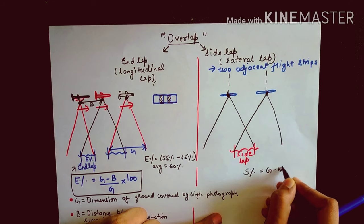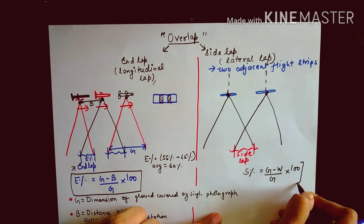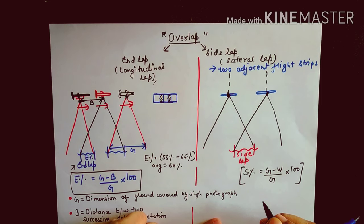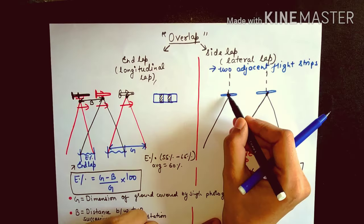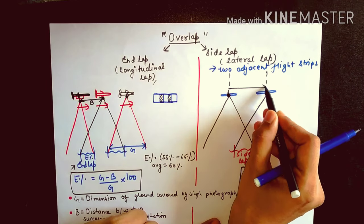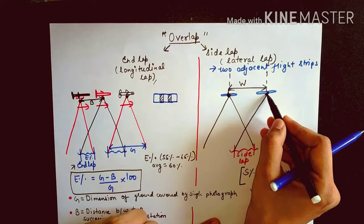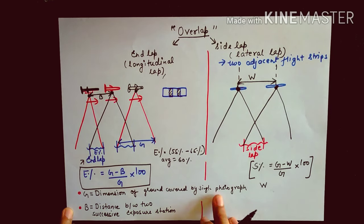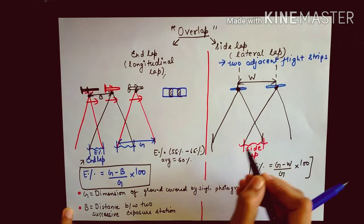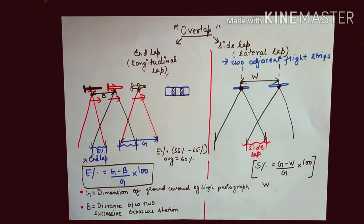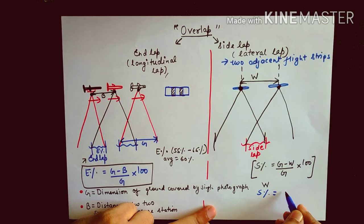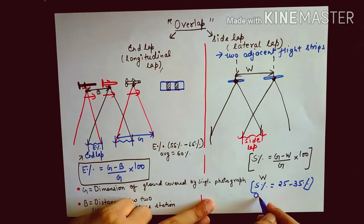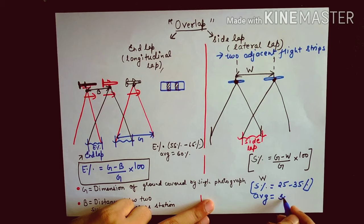The formula for side lap is: S% = (G − W) / G × 100, where W is the spacing between adjacent flight line strips, and G is the dimension of ground covered by a single photograph. The S% range is between 25% to 35%, and the average value commonly taken is 30%.